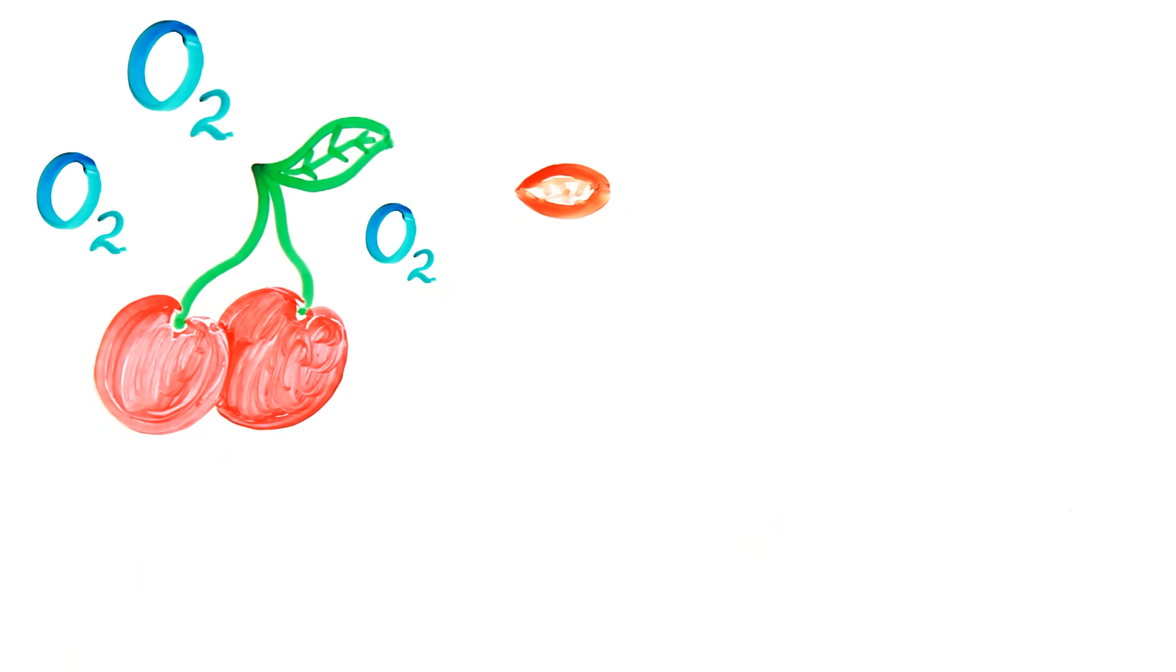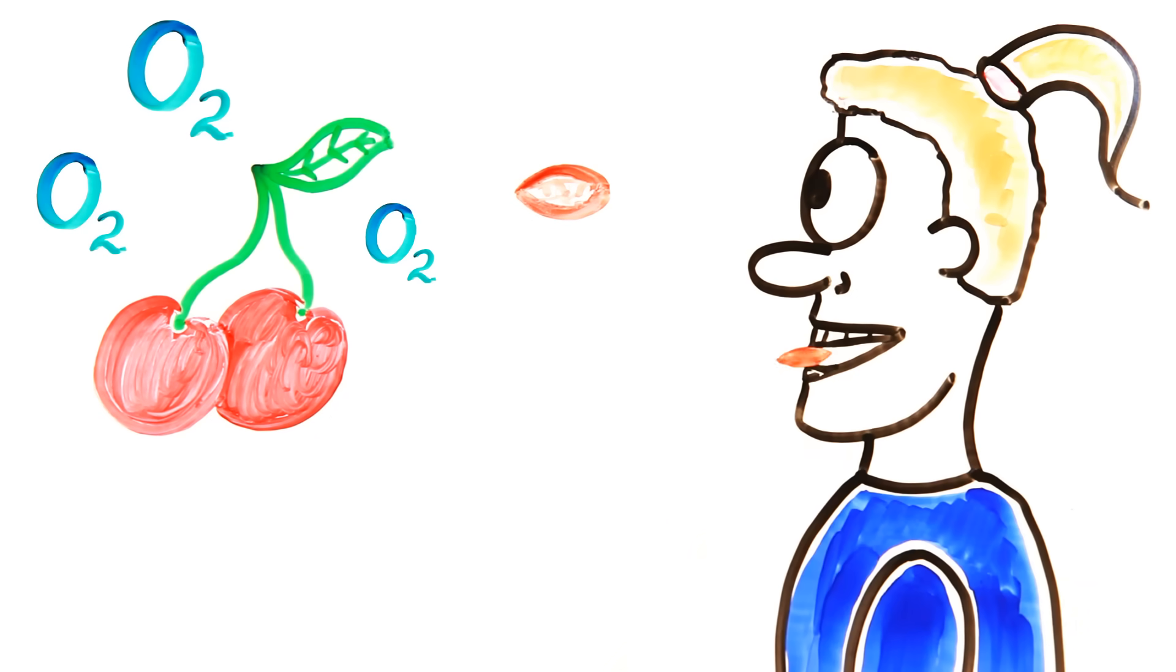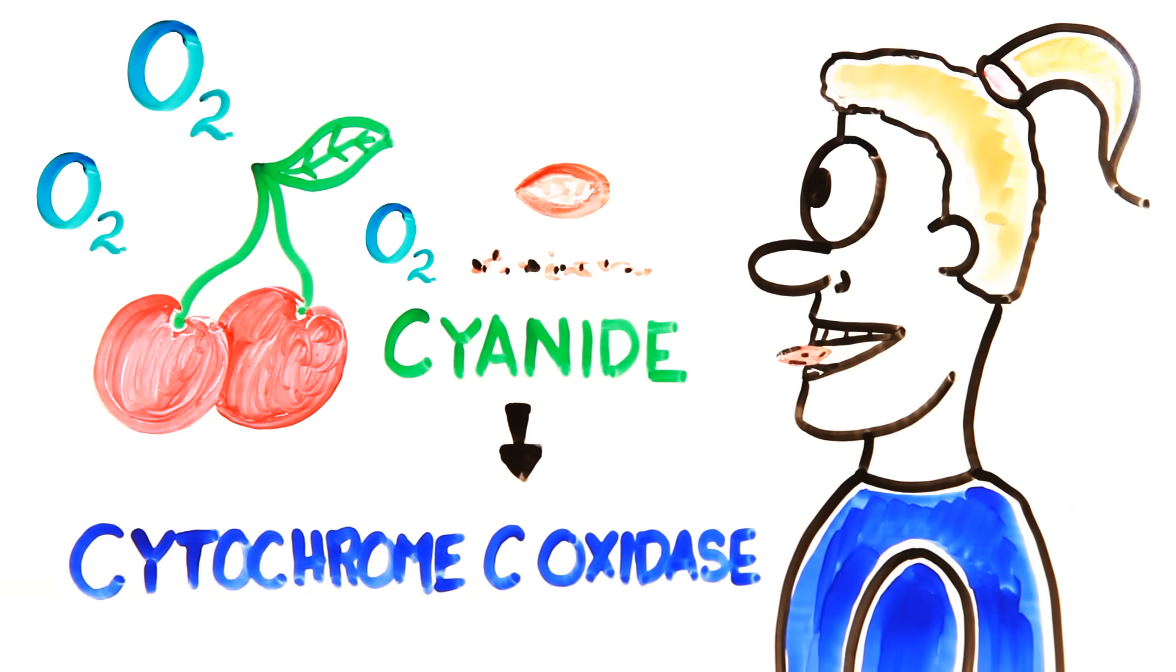Say what? If you ever swallow a cherry pit, you shouldn't worry too much. Just don't bite into one. One or two ground cherry pits contains enough cyanide to take you down. These cyanide ions inhibit the enzyme cytochrome C oxidase, causing your cells to be unable to use oxygen.